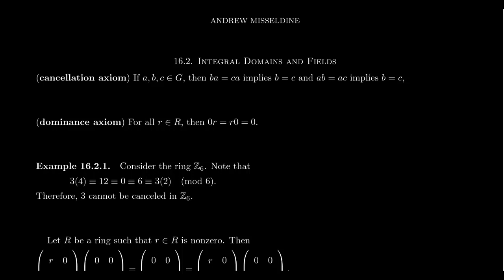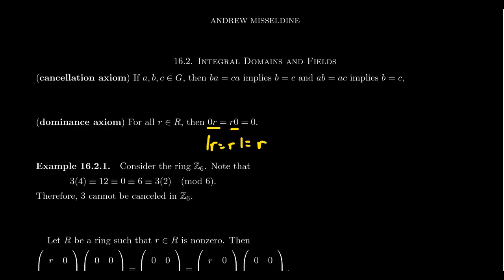One of the main reasons we can't do cancellation in a ring is because of this idea of dominance, sometimes called absorption. If you have an algebra — a set with a binary operation — we say an element is dominant if, calling that dominant element 0 in the context of ring theory, you take any element of the algebra and 0 times that element is always equal to 0, and that element times 0 is always equal to 0, since we're not assuming commutativity. So in some respect, this is like the opposite of the identity.